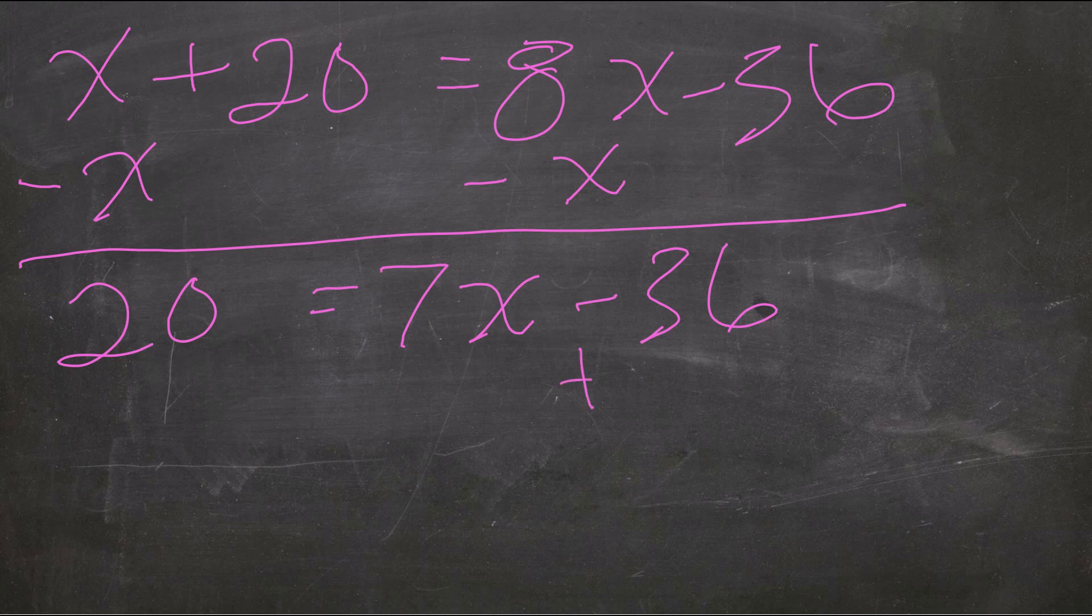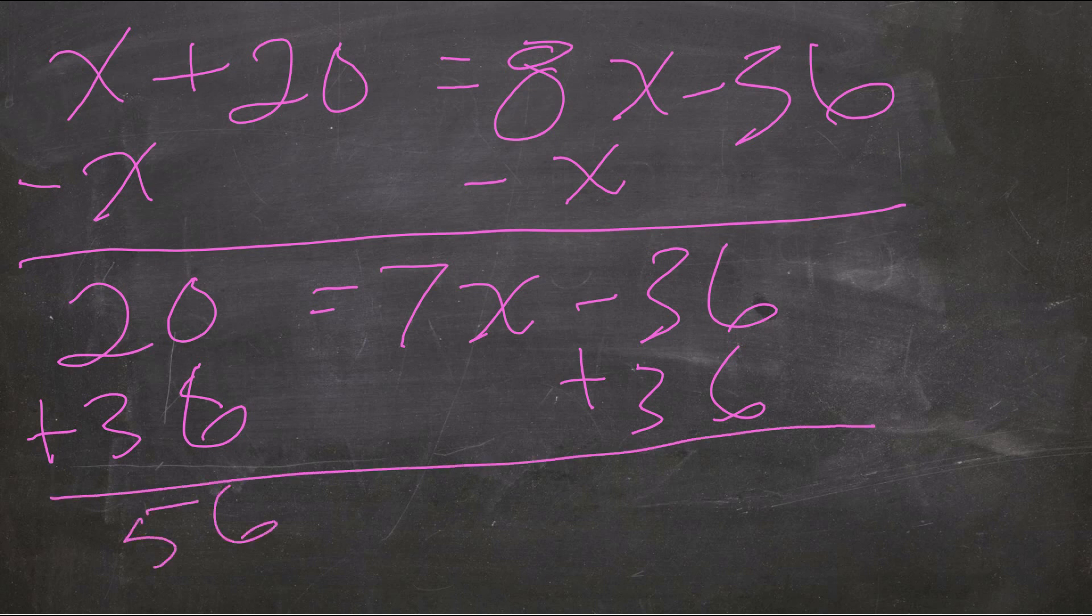Now I can add 36 to both sides. Then on the left, I get 56 equals 7x. Divide both sides by 7 and I get my x term of x equals 8.